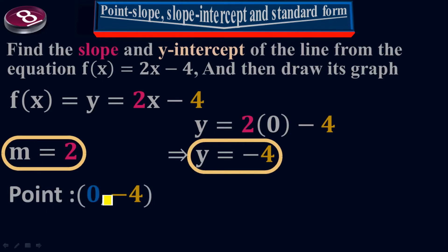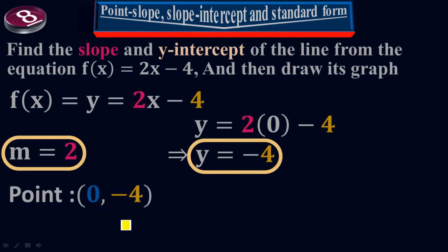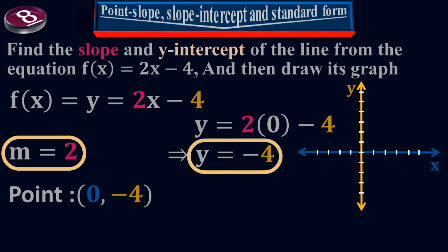What does that mean? It means the line will cross the y-axis at negative 4 and the x-axis at 0. Because if you plug in x equals 0, you get y equals negative 4 — that is the coordinate point in the xy-plane. Now to draw the graph: here is the xy-plane, and the coordinate point (0, negative 4) is located at x equals 0 and y equals negative 4 along the y-axis.